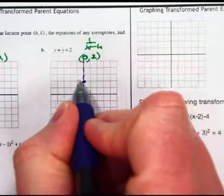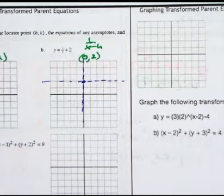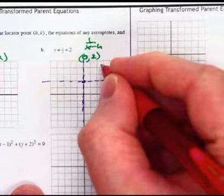So I immediately draw dotted lines because nothing can touch those lines or become those lines, that's the definition of an asymptote. And then this is a positive over here, so then I'm going to be in the upper right.